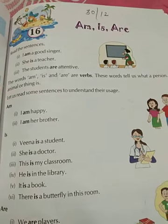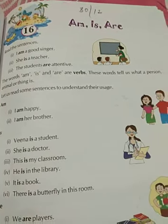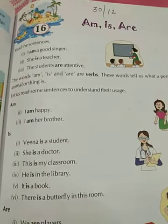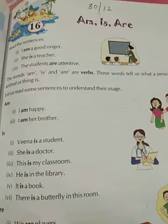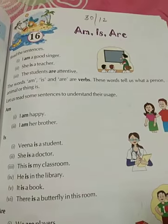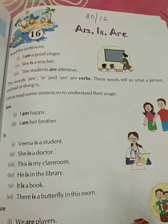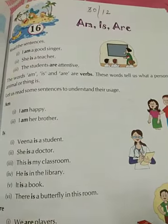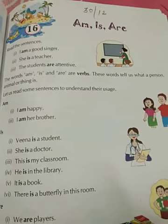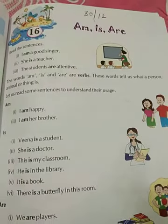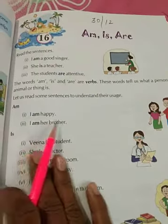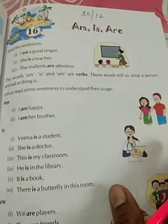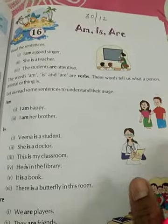Good morning students. Today's subject is grammar and this is chapter number 16. The name of the chapter is 'am, is and are.' When you have to use is, when you have to use am, and when you have to use are — it depends upon the sentence and whether it is in singular or plural form.